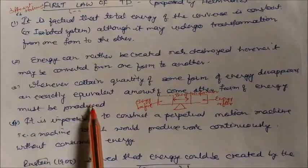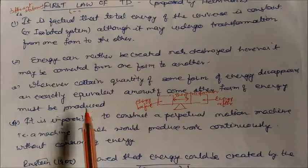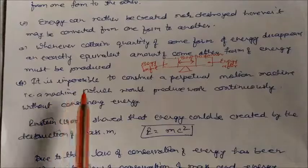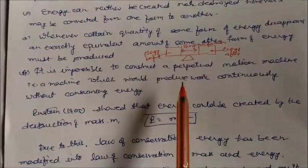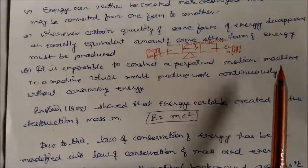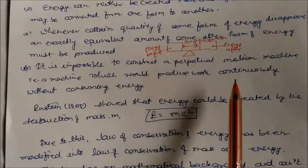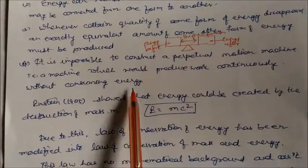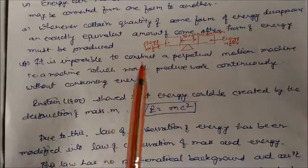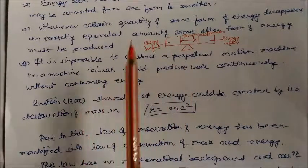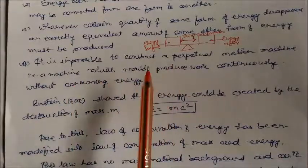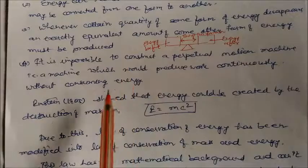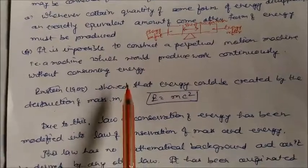Energy can transform from one form to another. A fourth statement is that it is impossible to construct a perpetual motion machine — a machine that would produce work continuously without consuming energy. Any machine that does work must also consume some energy.